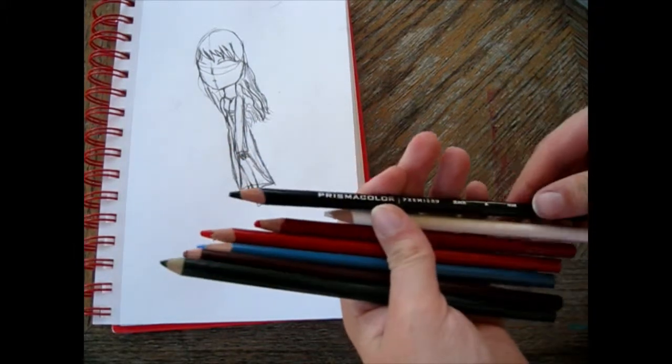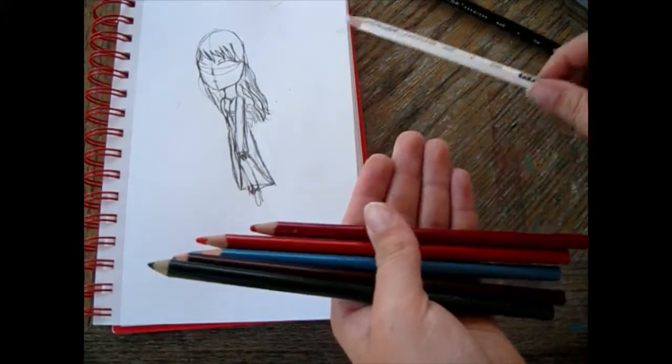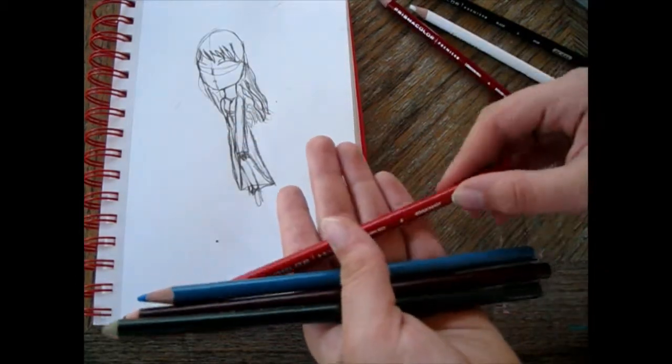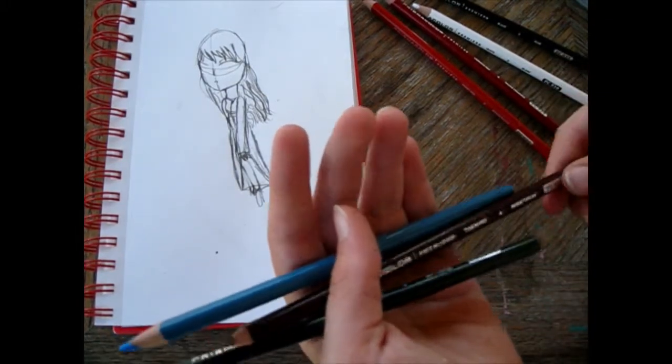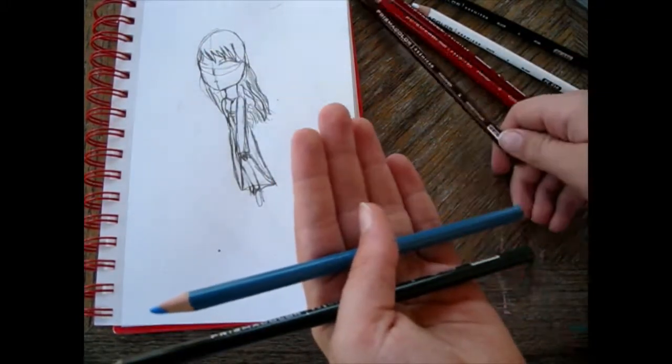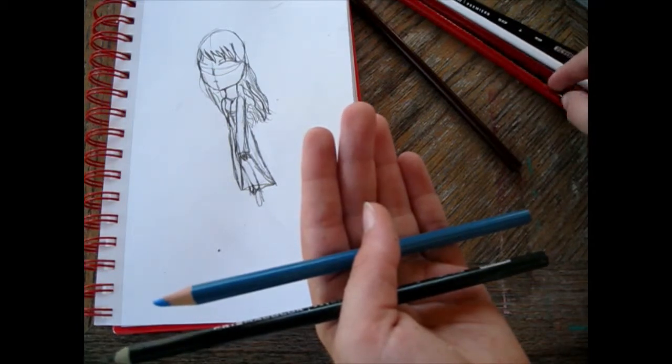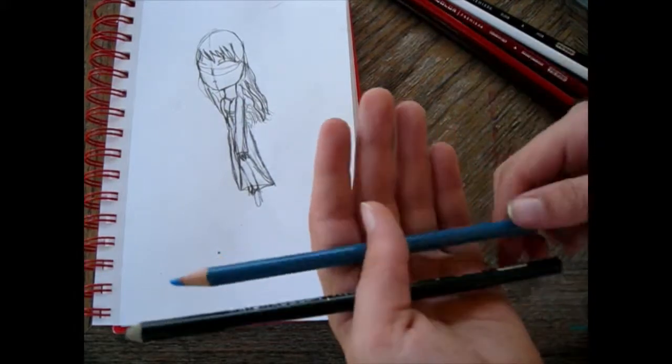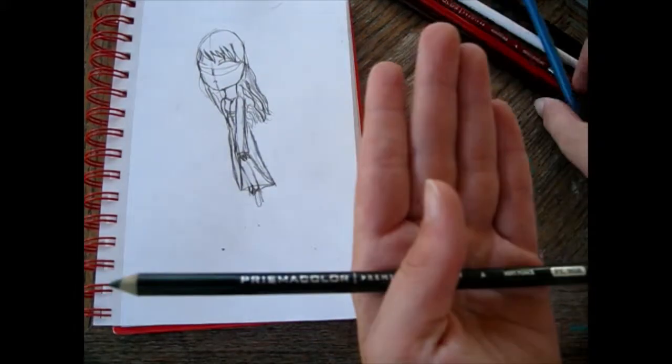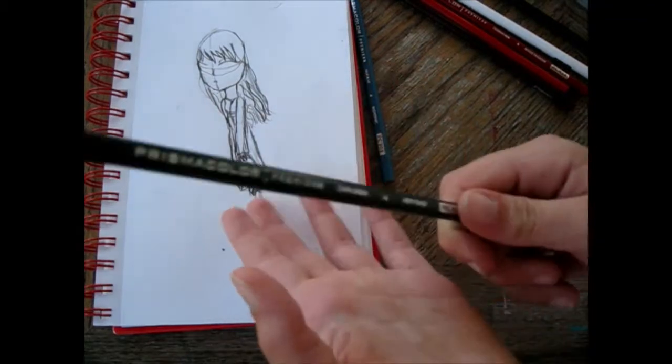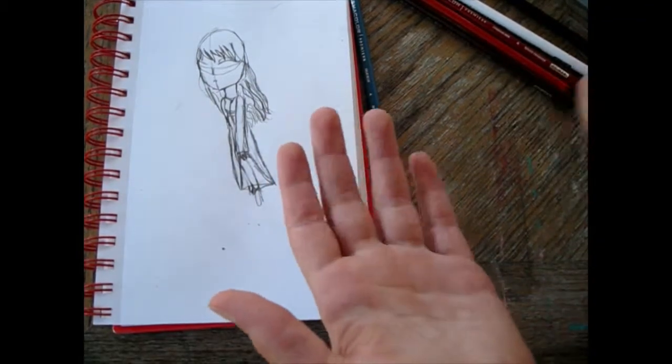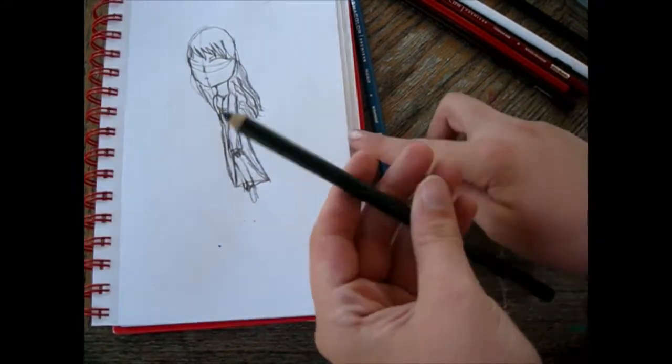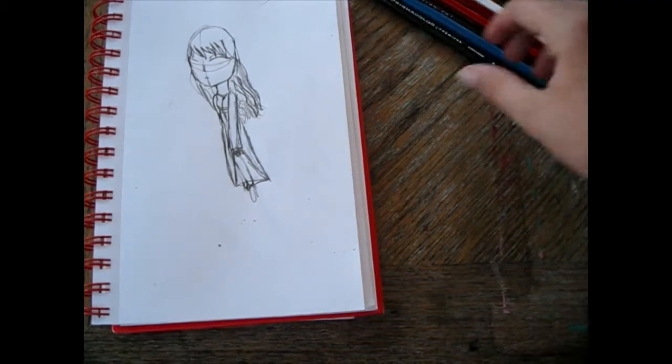The Prismacolors we have are black, white for shading purposes, crimson red, poppy red - I said the Spanish version, I'm so sorry - and true blue and dark green. You'll see why I need these. Did you guys ever notice how weird it feels when you tap yourself with a Prismacolor versus Crayola? Interesting.